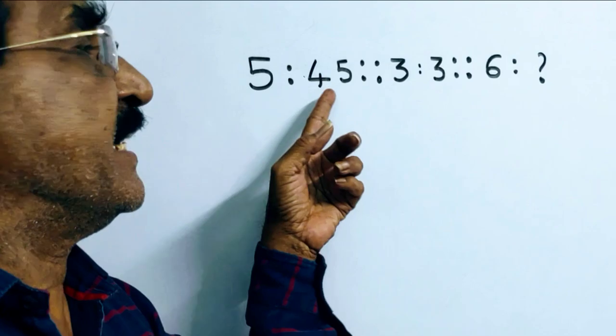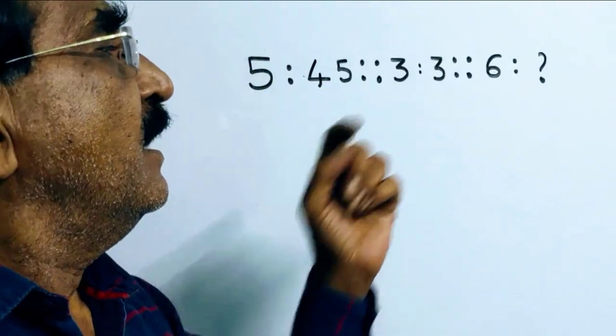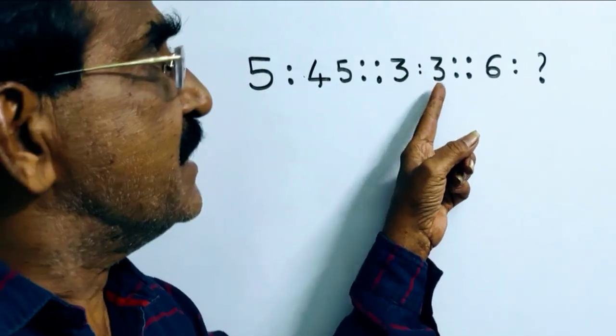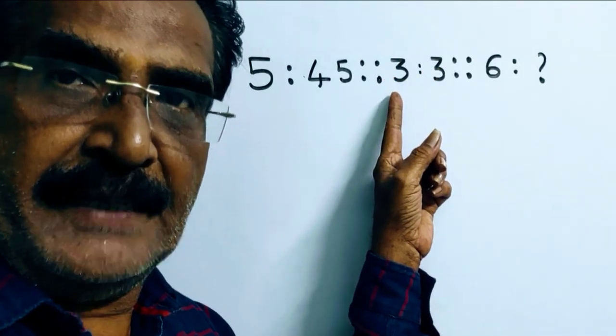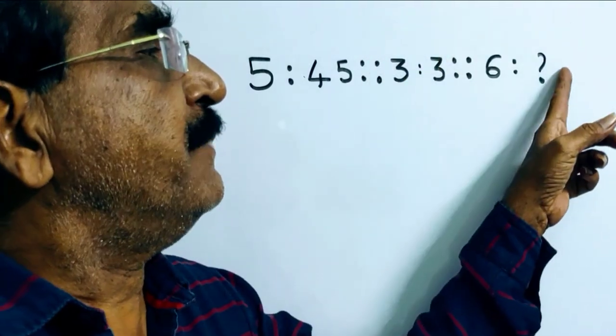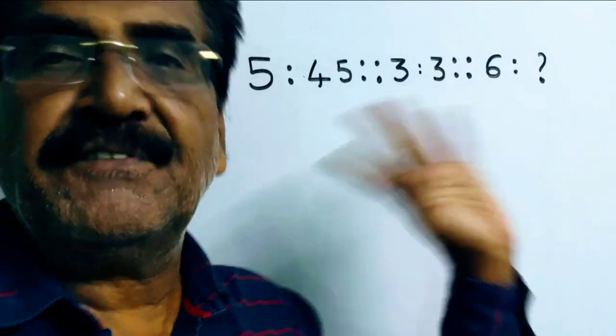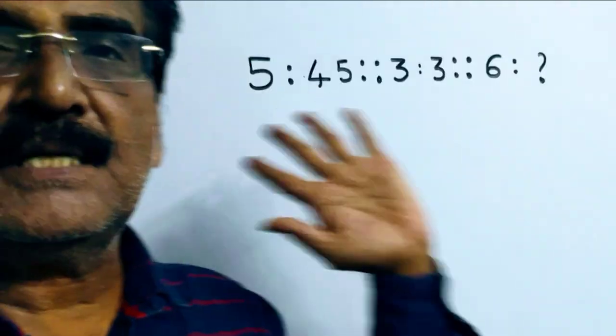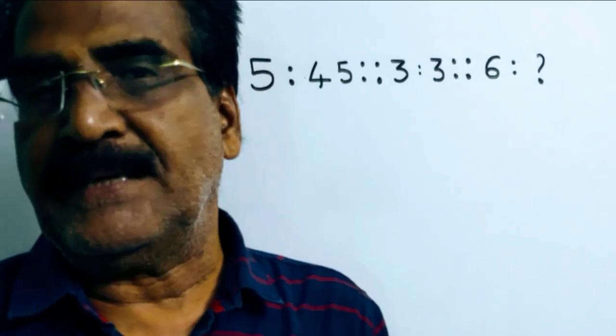Friends, here the second number is related to the first number and fourth number is related to the third number and sixth number is related to the fifth number. So, according to this relation, we have to find the sixth number.